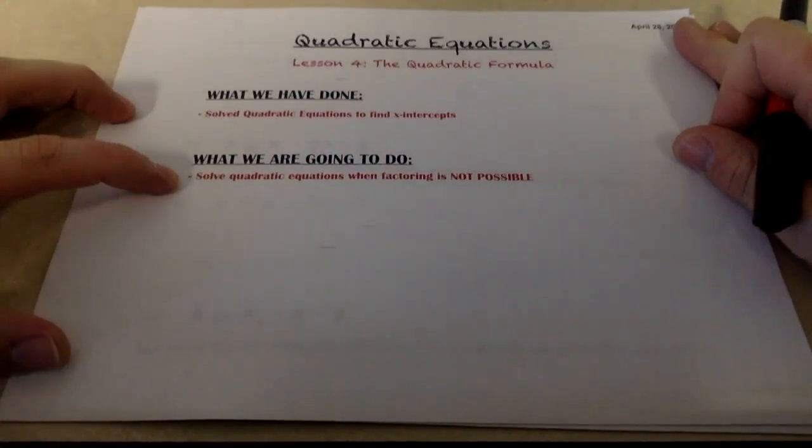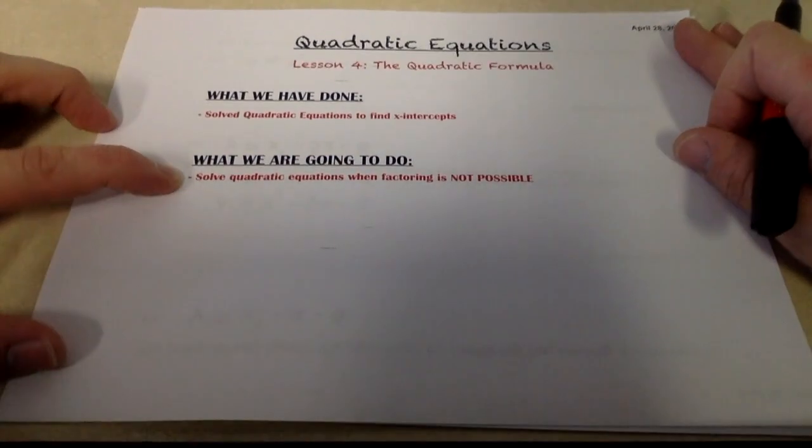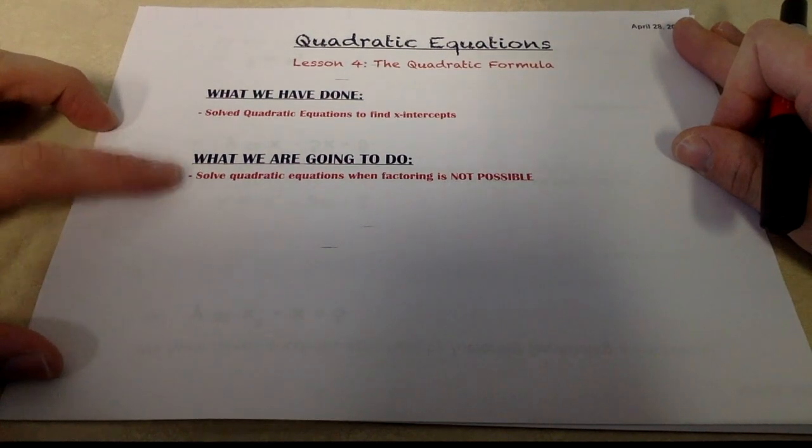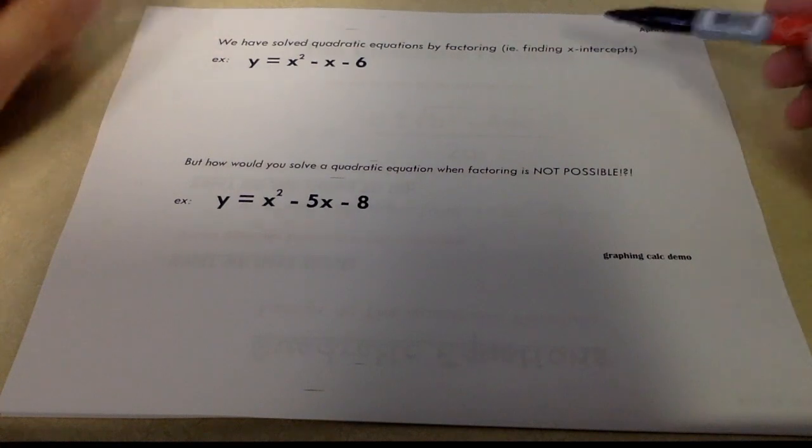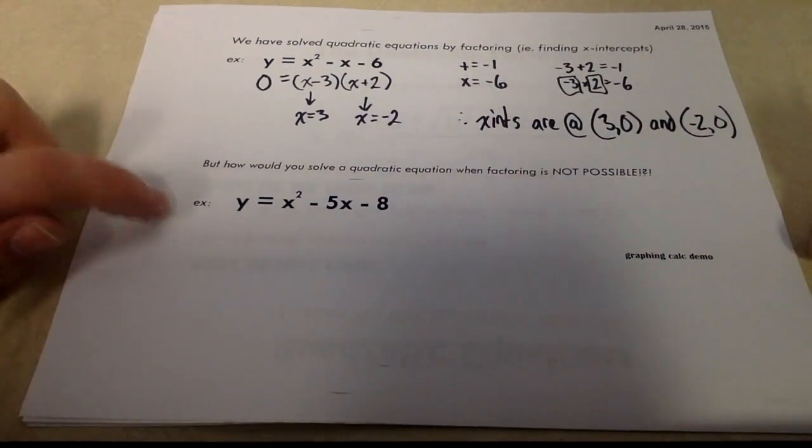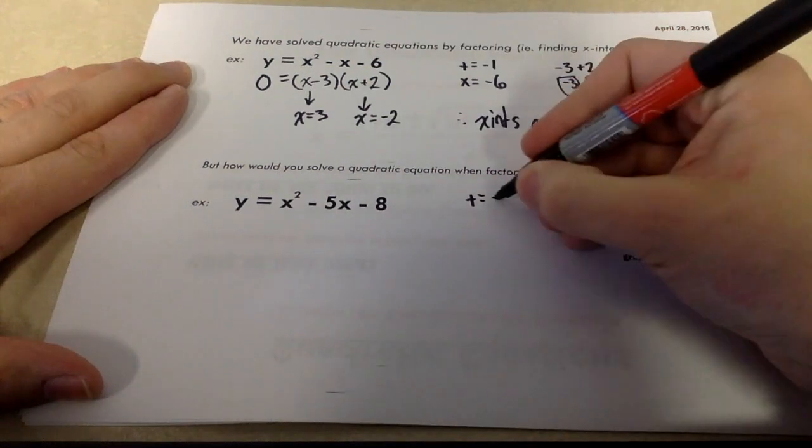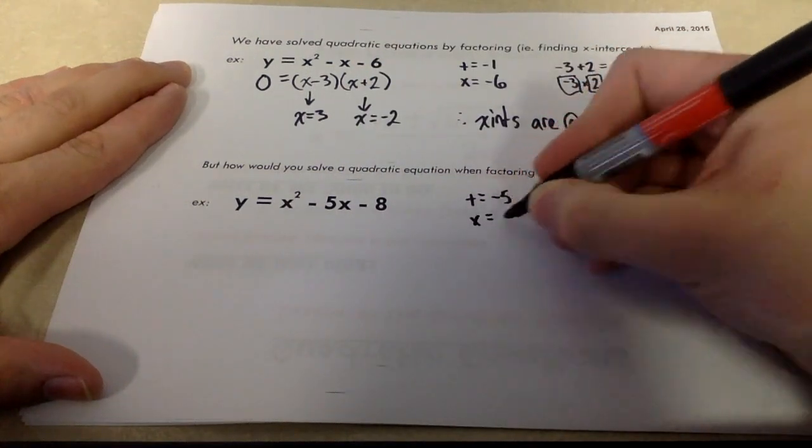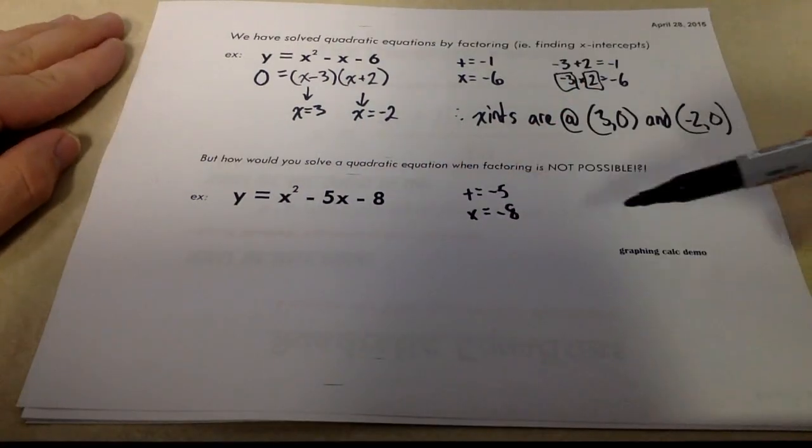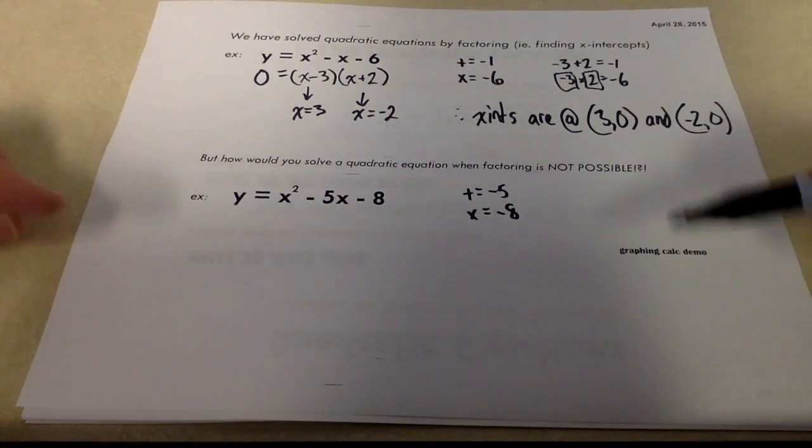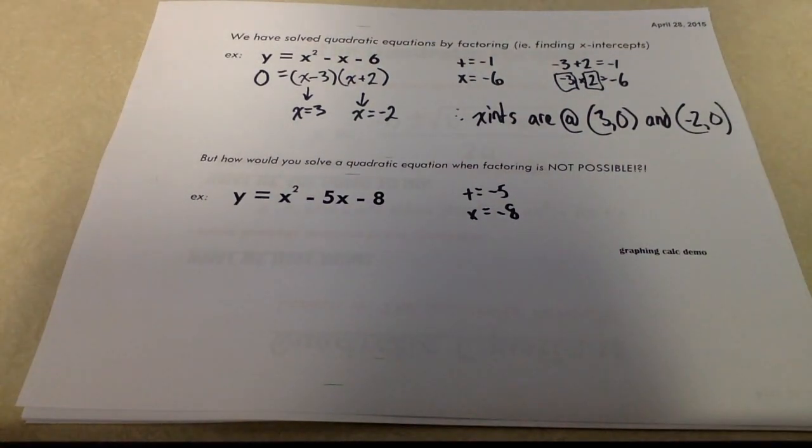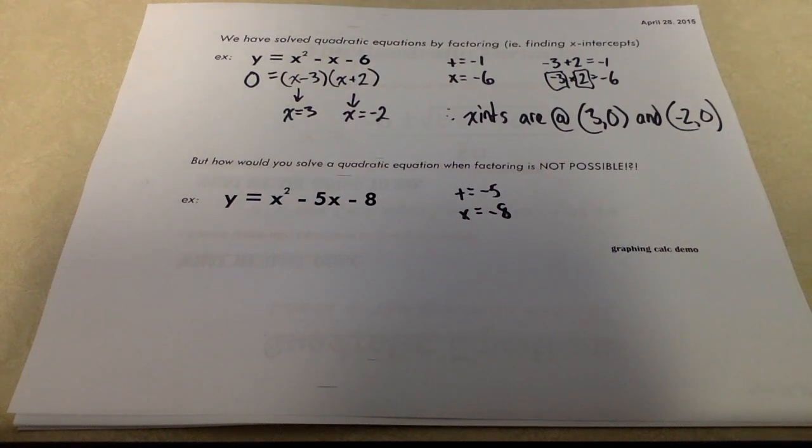Enjoy. We're going to solve some quadratic equations today when we cannot factor. So those of you who don't like factoring, you're going to be happy with this video. What you've seen so far is we've solved quadratic equations by factoring. So let's take a look at this quadratic equation. We could try to factor this, try to find two numbers that add to get negative five and multiply to get negative eight. But you'll quickly realize that no such numbers exist. So I'm just going to show you a quick graphing calculator demo here that should illustrate that this quadratic equation does in fact have x-intercepts. While it's not factorable, it does still cross the x-axis in two places.